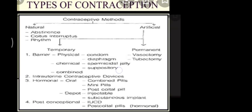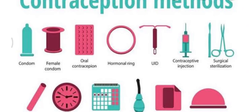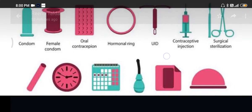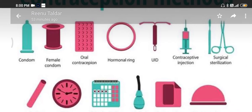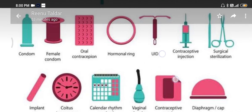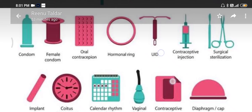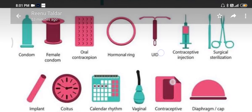Now let us look at the next method. You can see here the male condom and the female condom in the diagram. You can also see the diaphragm and cervical caps. These are the contraceptive methods involved in the mechanical or physical methods.